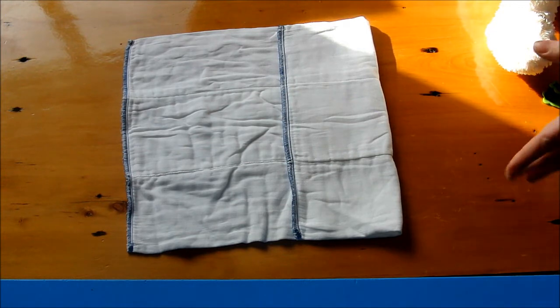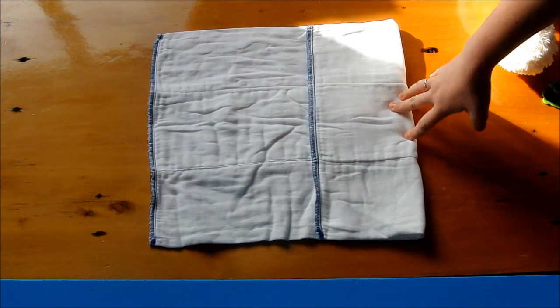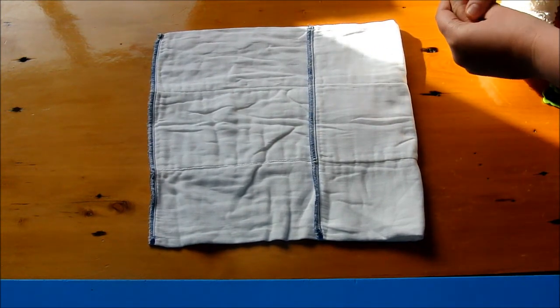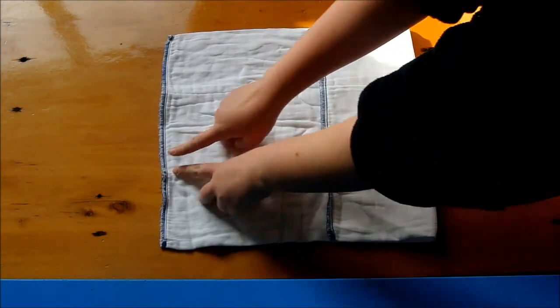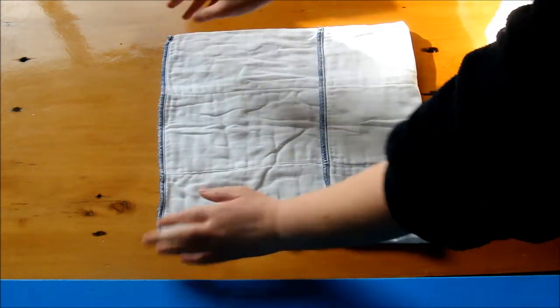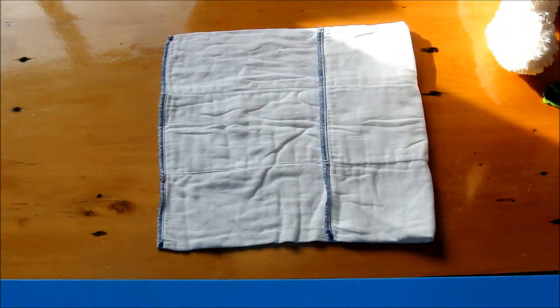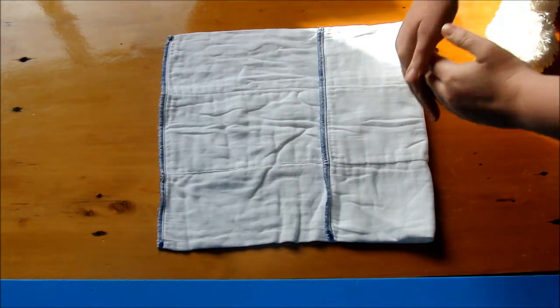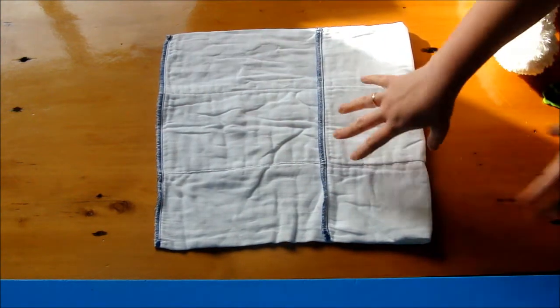This fold works really well if the prefold is slightly too narrow widthwise for getting the wings around the child, or if the prefold is too long. This helps reduce bulk between the legs.